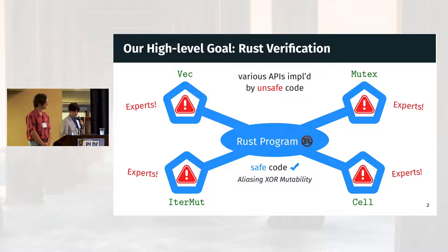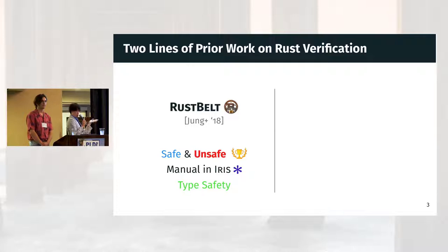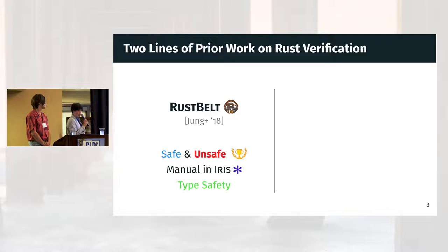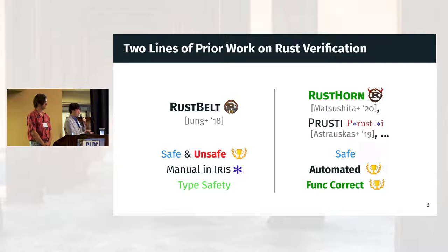More concretely, our work is built on two major lines of prior work on Rust verification. One line is RustBelt, the first formal mechanized proof of type safety — memory and thread safety — for Rust's type system. It provides a semantic model of Rust's ownership types in the separation logic Iris, and manually proves that Rust's APIs built from unsafe code are semantically safe. The other line is automated functional verifiers for Rust, including RustHorn by Matsushita et al. and Prusti by Astrux et al. These tools can automatically verify functional correctness of Rust programs, not only safety. On the other hand, they only target safe code — no unsafe code.